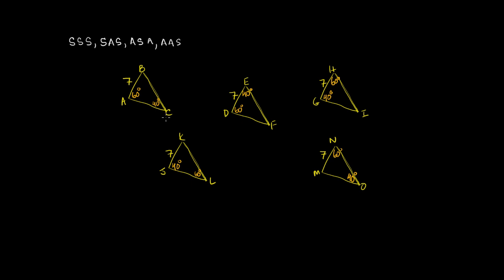In triangle ABC, we're given the length 7, then 60 degrees, and then 40 degrees. Another way to think about it: we're given an angle, an angle, and a side — 40 degrees, then 60 degrees, then 7. For something to be congruent to this, it would need to have angle, angle, side with those same values in the same order. It can't be 60 then 40 then 7, because here the 60-degree angle has the side of length 7, not the 40-degree angle.